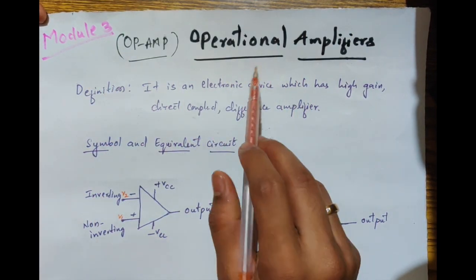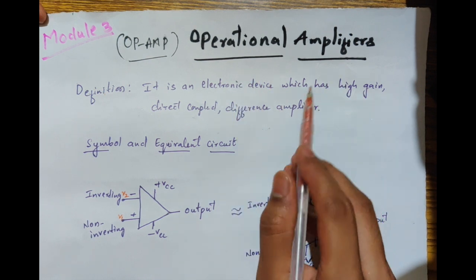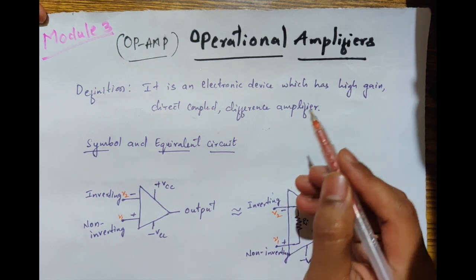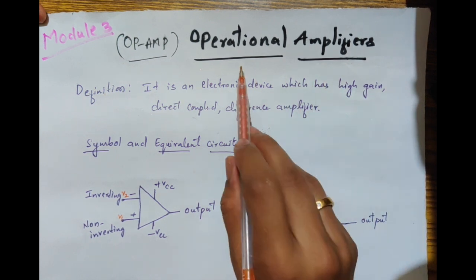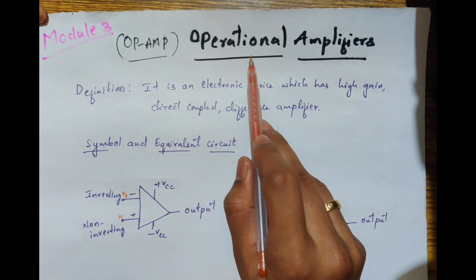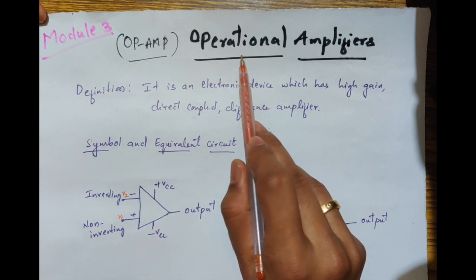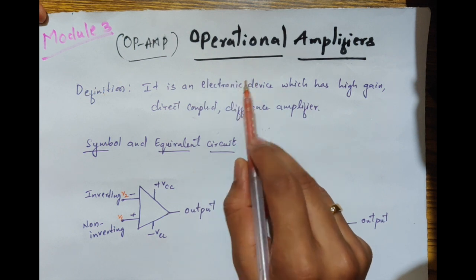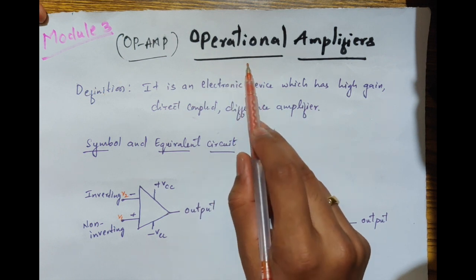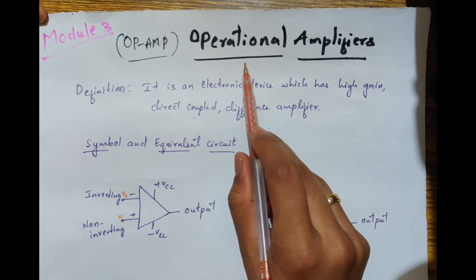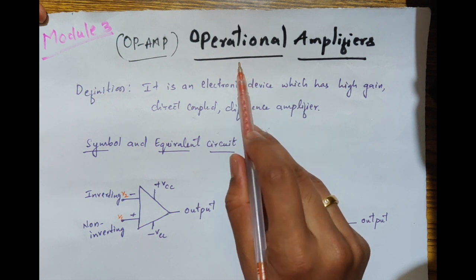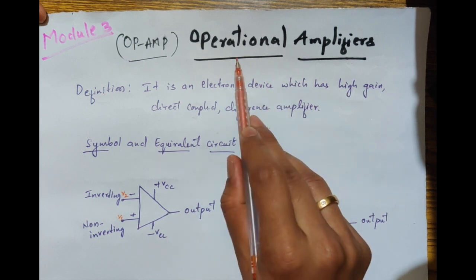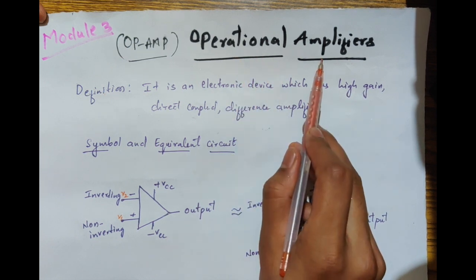First we will study what is an operational amplifier. We all know that amplifiers are nothing but circuits which are used to increase the strength of weak signals. Operation means either mathematical operations or logical operations. Mathematical operations like addition, subtraction, integration, differentiation, and logical operations like voltage follower or buffer and comparator. So it is a combination of operation and amplification.